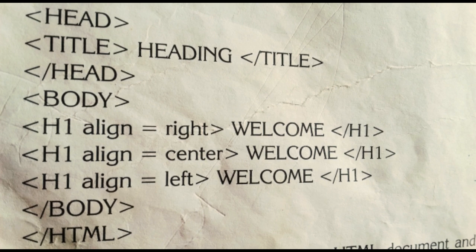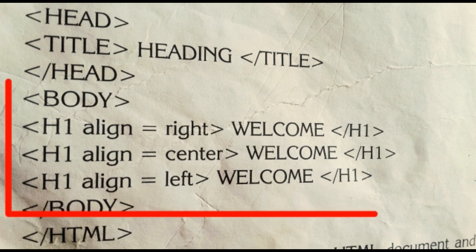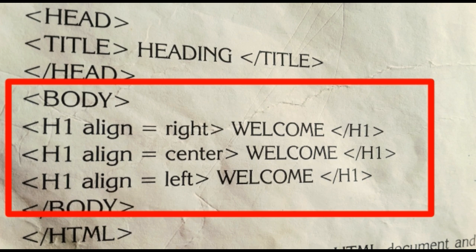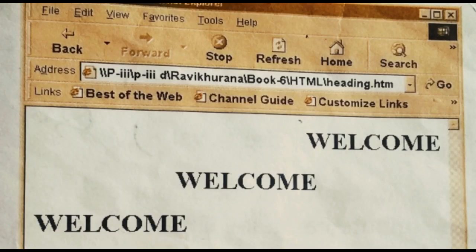In this class I will tell you about how we can change heading alignment. As you can see in this tag, after the heading h1 in the opening tag, we have added the word 'align'. Align is equal to right for the first heading, align is equal to center for the second heading h1, and in the third line in the body h1 align is equal to left.